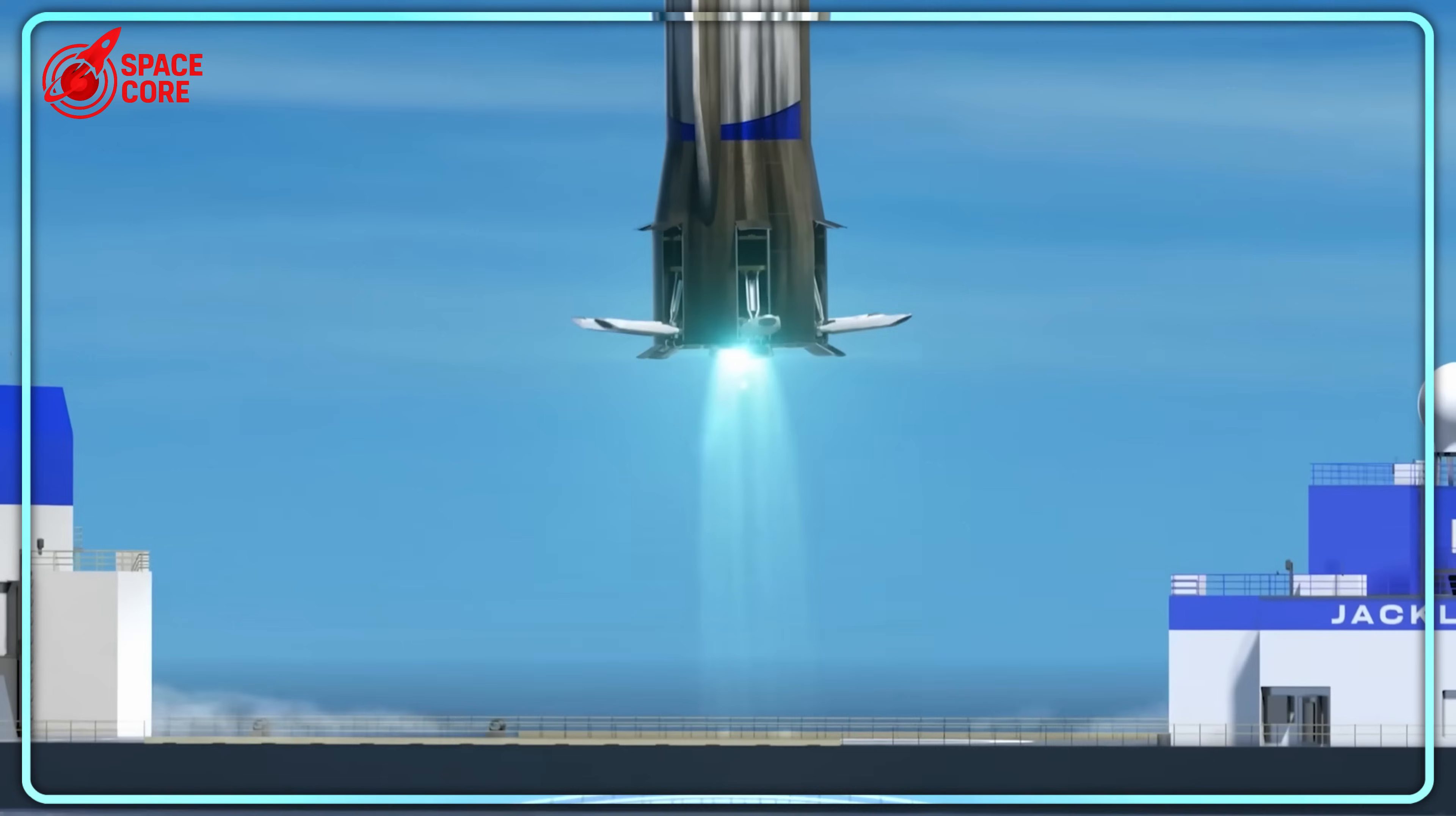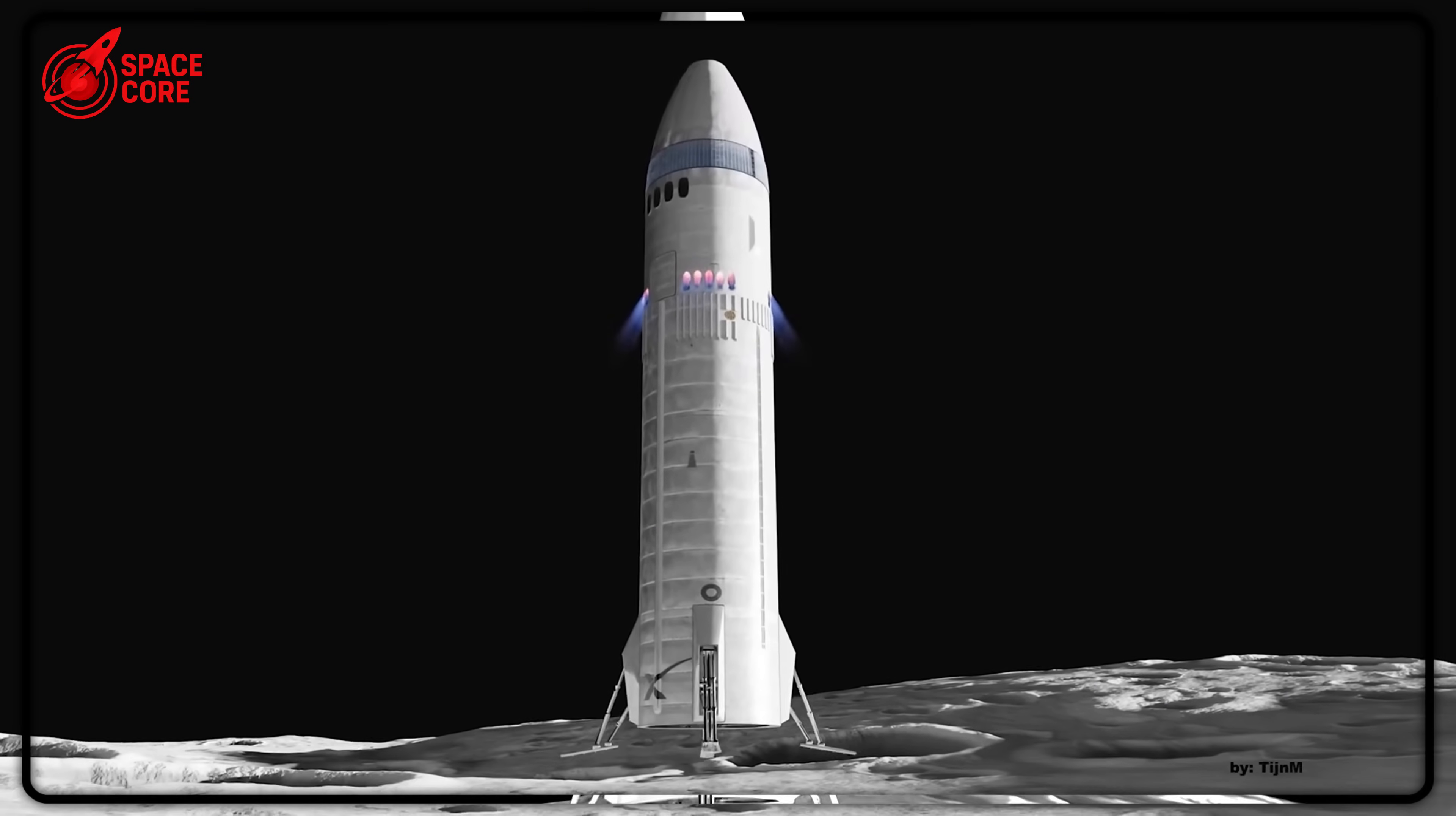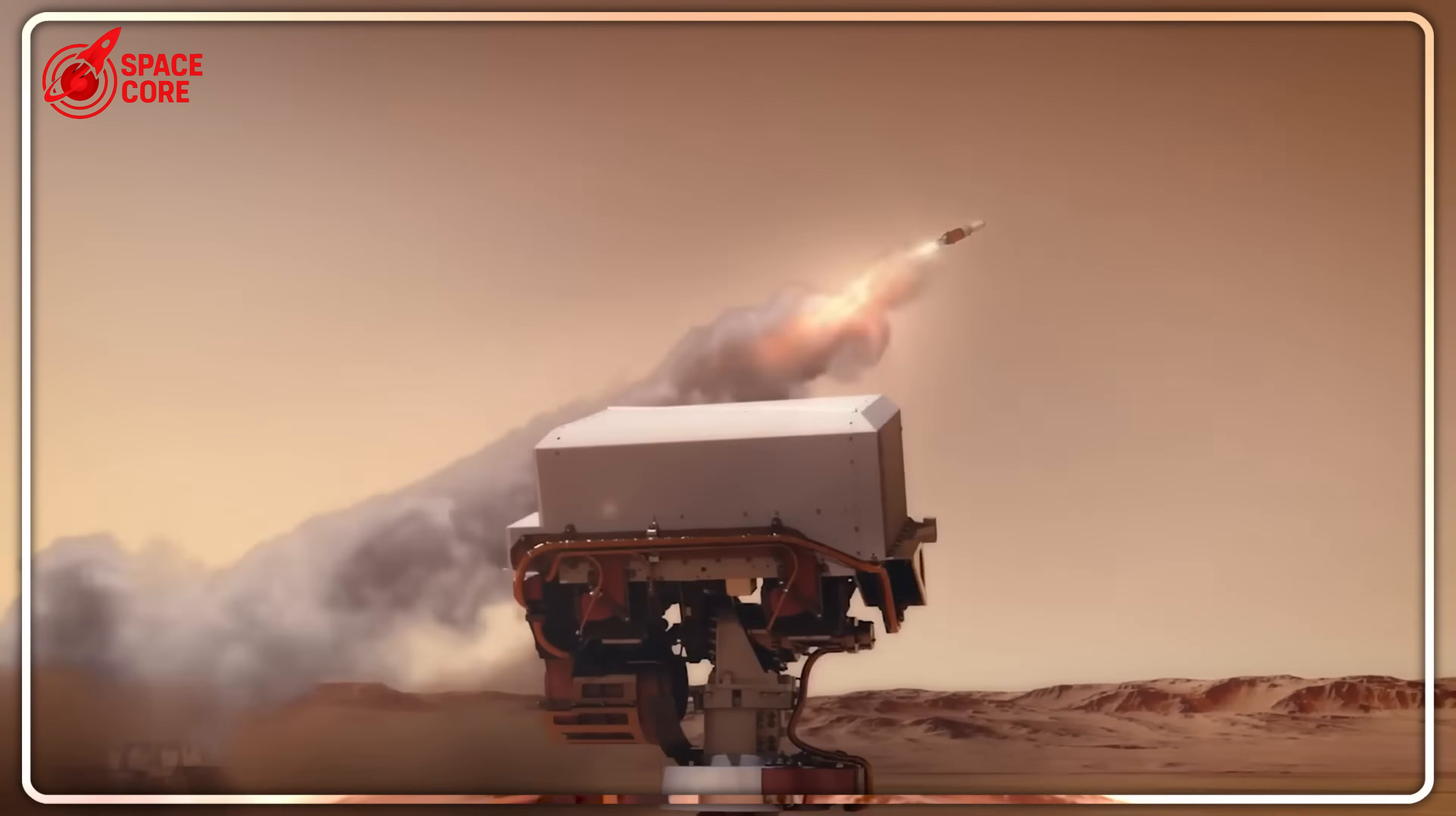In the past 18 months, Blue Origin has lost 23 senior engineers from the New Glenn program. 23 experts who decided their reputations were more valuable than their paychecks. Here's what one departing engineer wrote in his resignation letter: 'I cannot in good conscience attach my name to a program that prioritizes timeline fiction over engineering reality.' That letter was sent to Jeff Bezos personally. The response? Bezos reportedly told executives to find engineers who understand urgency. Translation? Find engineers willing to lie about impossible deadlines.